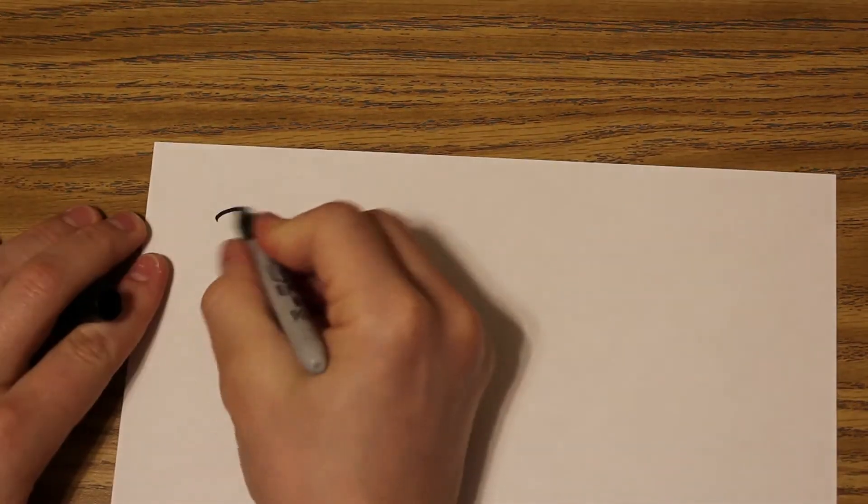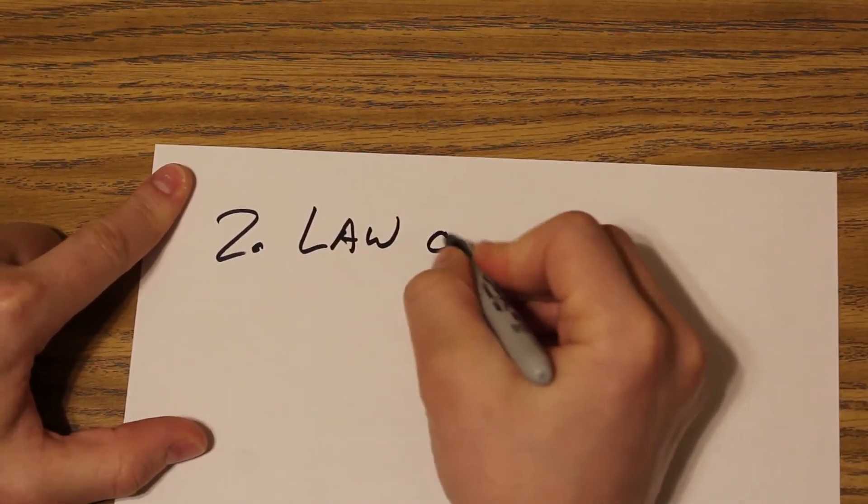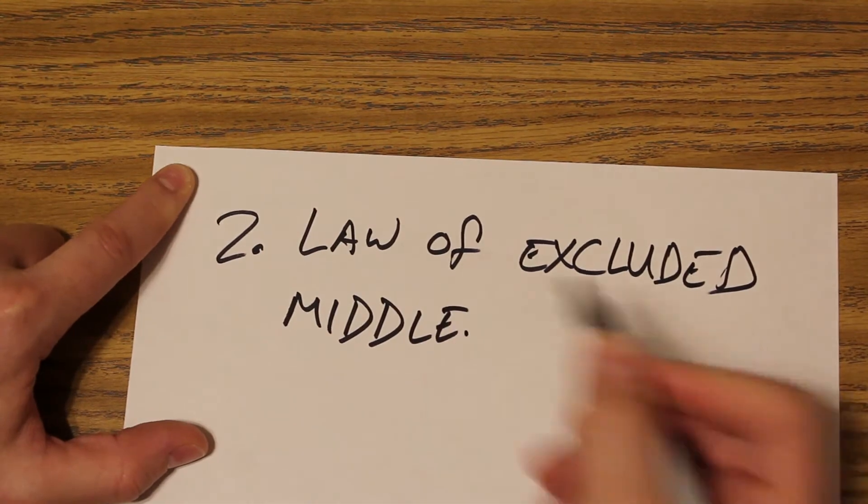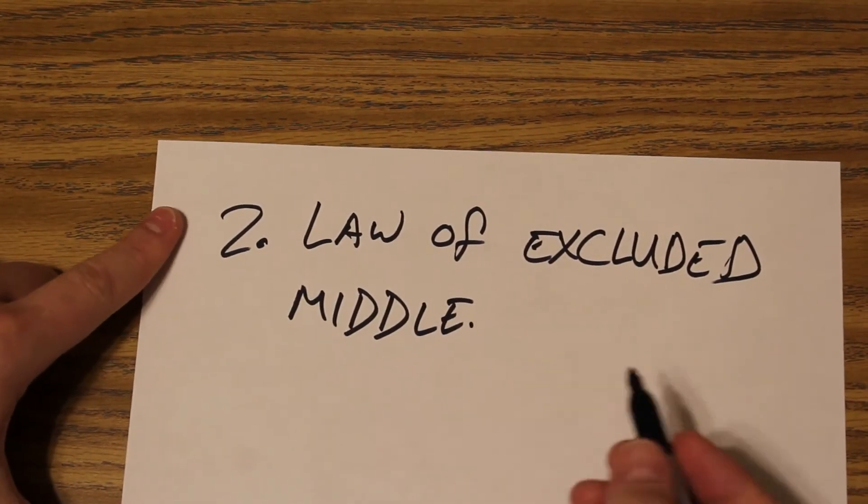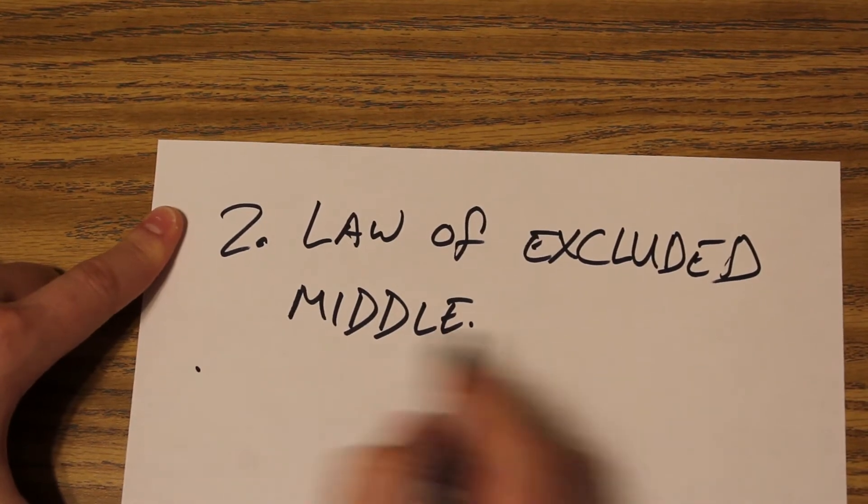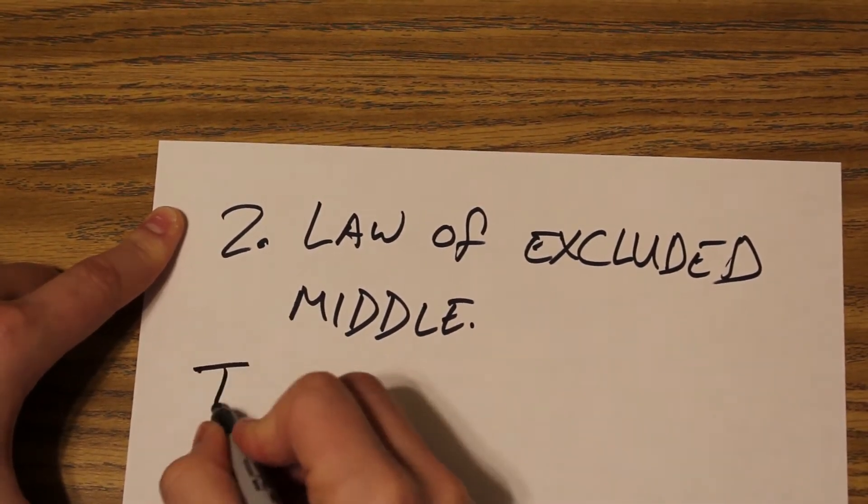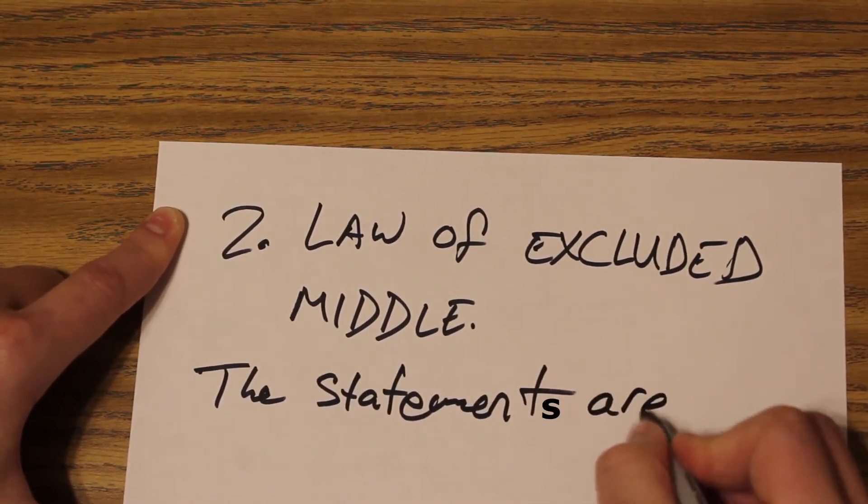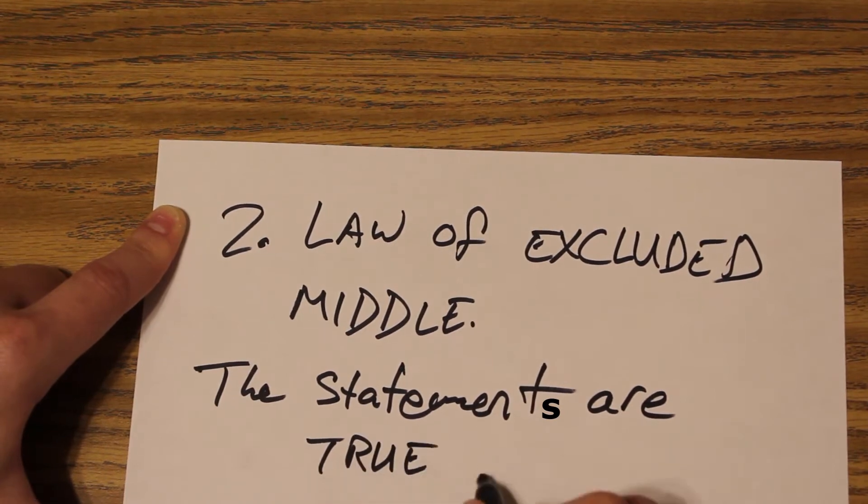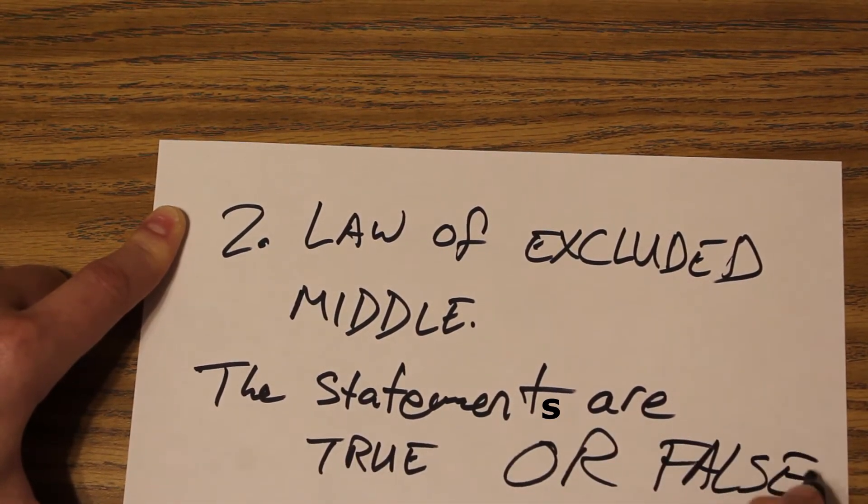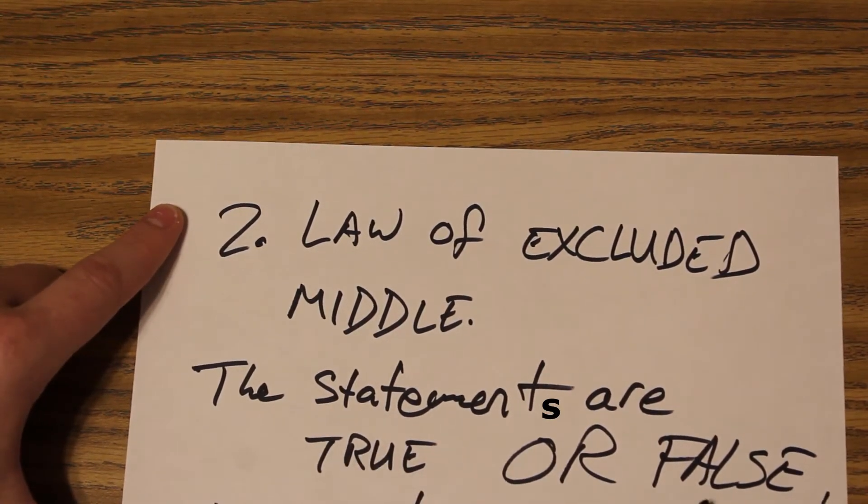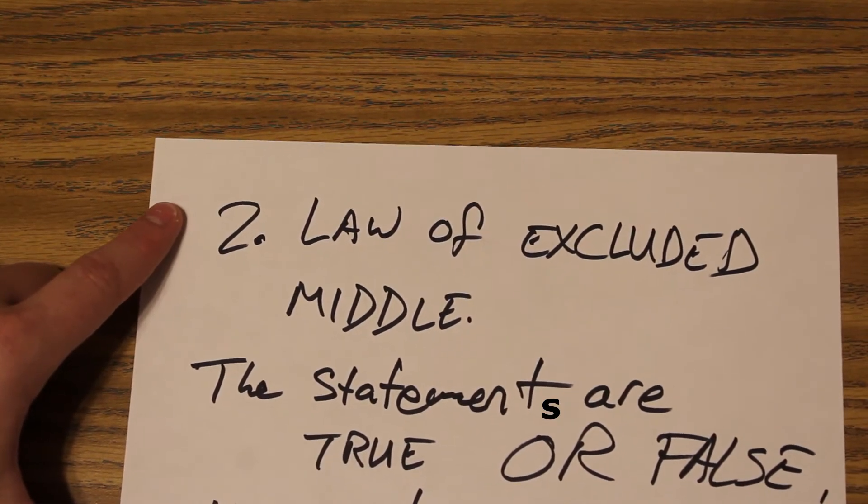Our second law is the law of excluded middle—and I like making this the second one. Just a little bit of logical irony. We're not allowed to use a middle here. Any statement will be either true or false, no in-betweens. The law of excluded middle is that you don't get a 'tross'—there isn't, that doesn't exist. It's either true or false. No middle ground.